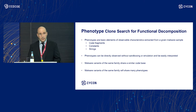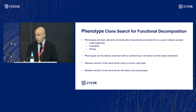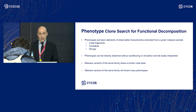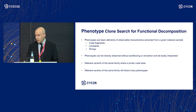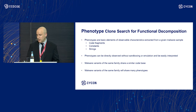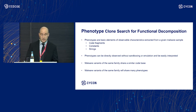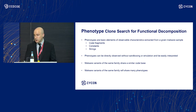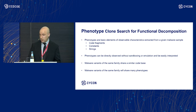To complement the existing approaches and address some of their limitations, we propose a new approach called phenotype clone search. Phenotypes are basic elements of observable characteristics extracted from a given malware sample. Examples of phenotypes are code fragments, constants, and strings. Phenotypes can be directly observed without sandboxing or emulation and since they can be easily interpreted, our assumption is that malware variants of the same family will share many phenotypes.